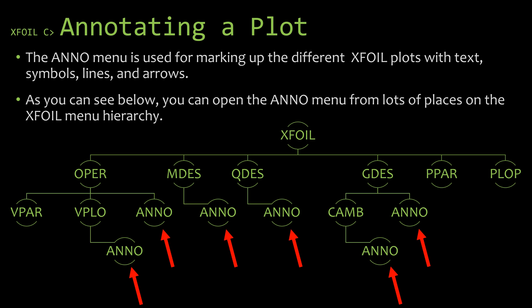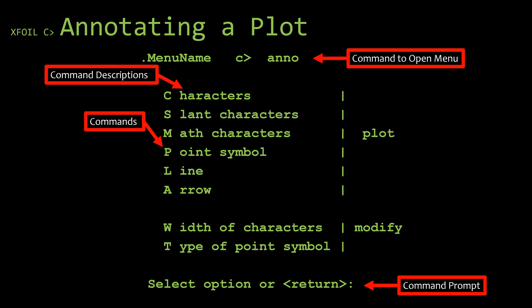Now, I went ahead and I recopied X-Foil's menu hierarchy here. The idea being, you can see just how accessible this Anno menu is from different parts of X-Foil. The reason, of course, is because these different menus work on the different plots. You are not able to use Anno on every single plot that X-Foil makes, but you're able to use it on most. For instance, the paneling plot, you're not able to actually annotate. Even though this menu is located in different parts of the menu hierarchy, when you access it, it is the same menu. For that reason, I'm just going to use Menu Name, where I would typically put the actual menu that we were dealing with.